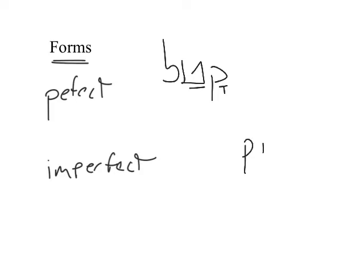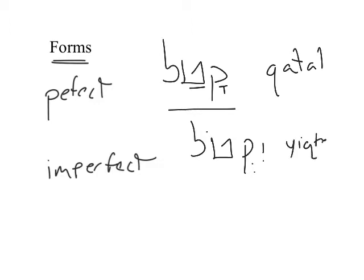And the imperfect of katal is yikto. So sometimes we even will call this, because we use this paradigm word so much, a katal form or a yikto form. And you'll see this fairly commonly in the literature. But probably the main names still are perfect and imperfect.